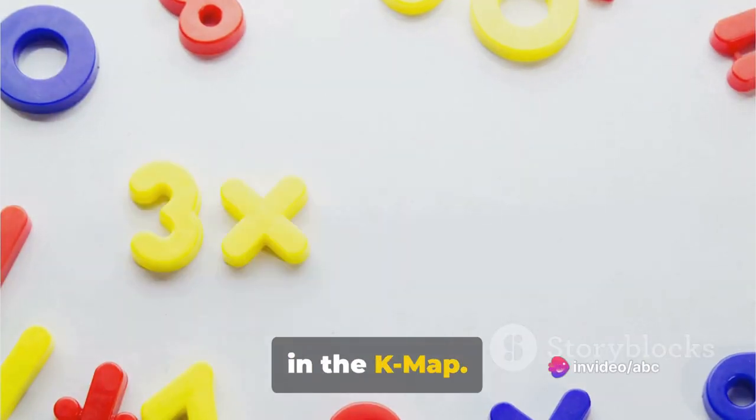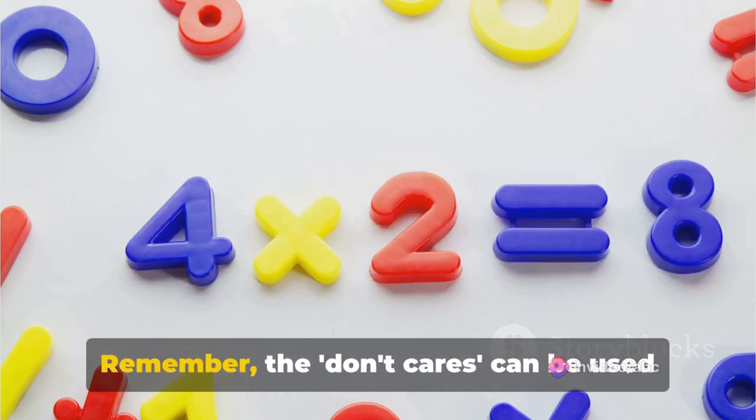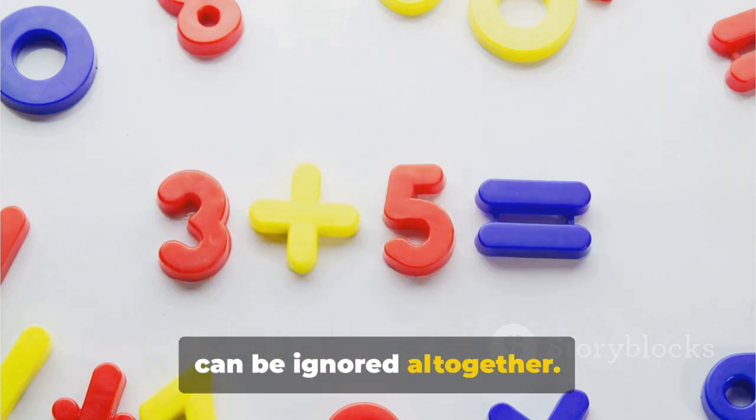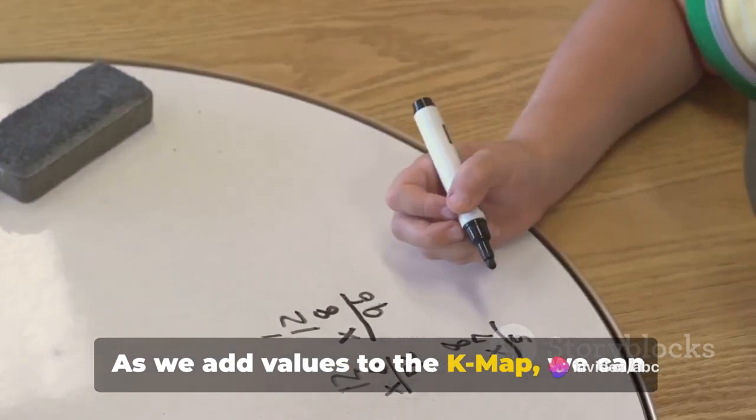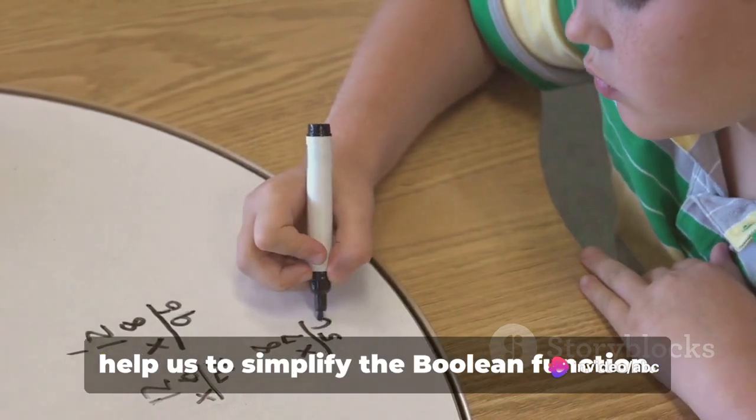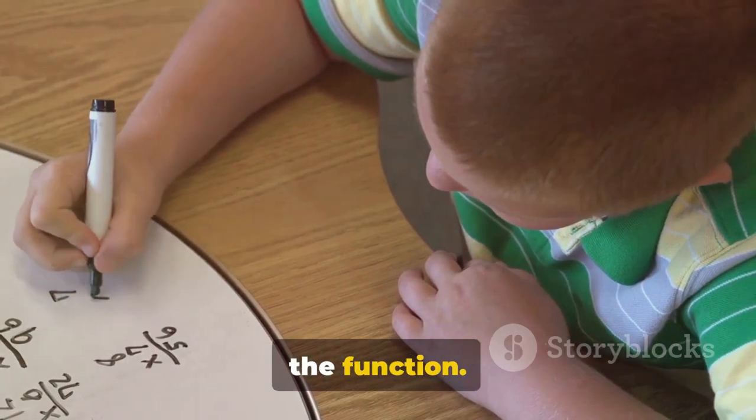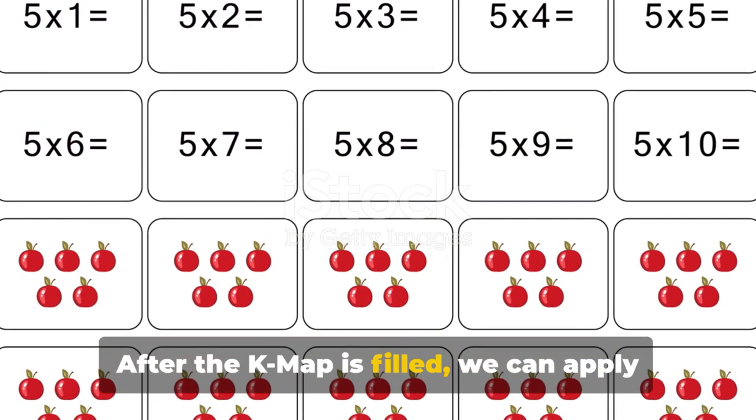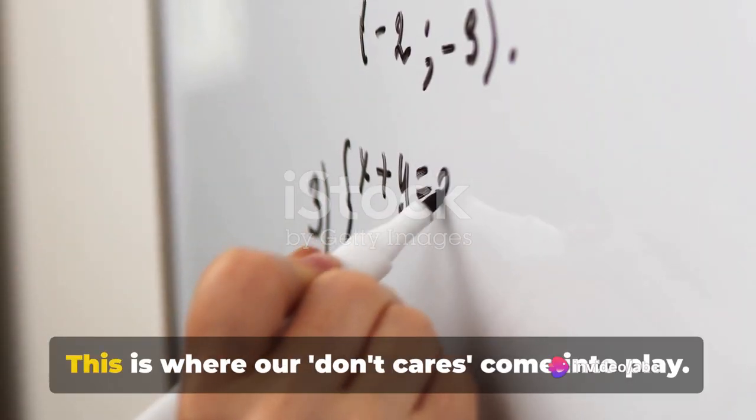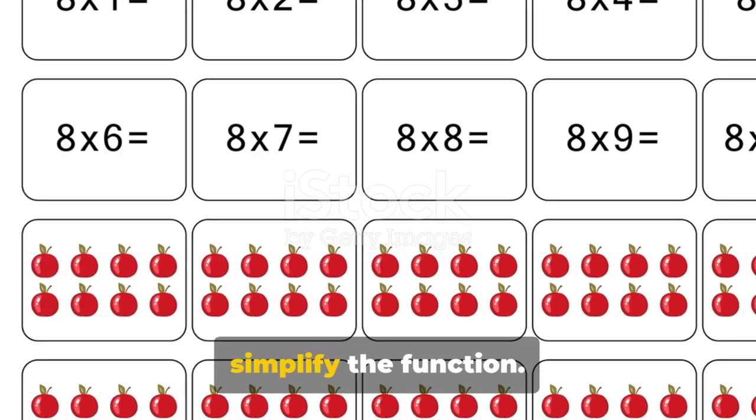Now let's fill in the K-Map. We'll use the truth table of the Boolean function to determine the values for each cell. Remember, the don't cares can be used to either simplify the function, or they can be ignored altogether. As we add values to the K-Map, we can start to see patterns emerge. These patterns, or groups of ones, will help us to simplify the Boolean function. The larger the group of ones, the simpler the function. After the K-Map is filled, we can apply the rules of Boolean algebra to minimize the Boolean function. This is where our don't cares come into play.